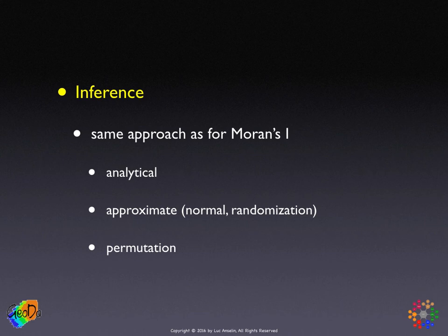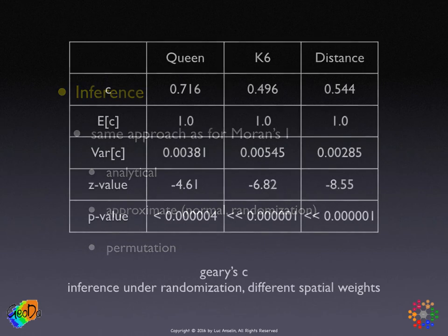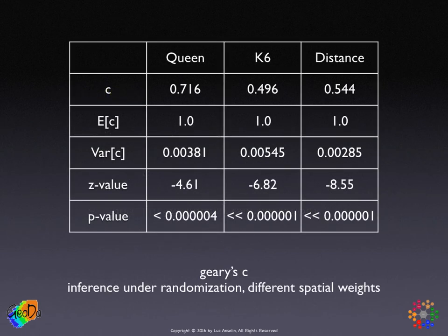The expressions for the moments under the null are quite a bit more complicated than for Moran's I, and we won't go into detail here. The Cliff and Ord reading covers this from a more technical point of view. In our example using the same house prices and the same weights as for Moran's I, we see that all the Geary's C statistics are less than 1, pointing to positive spatial autocorrelation — which is what we also found with Moran's I. The means are all 1 and do not vary with the weights; they are always constant.